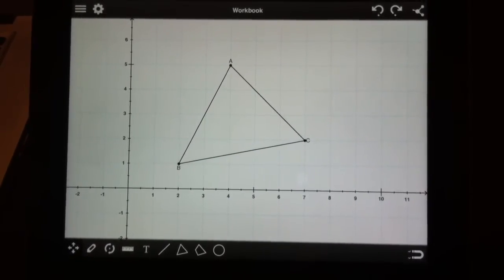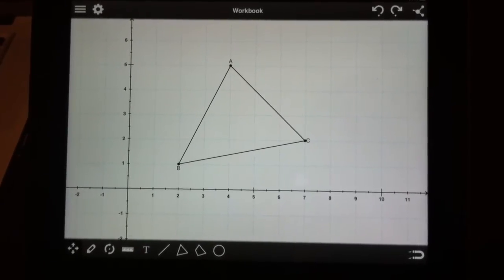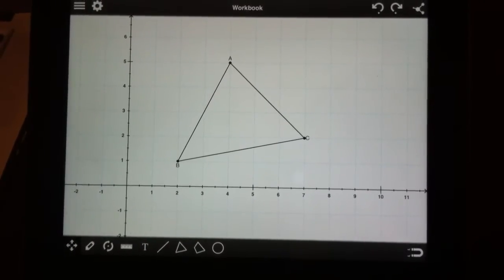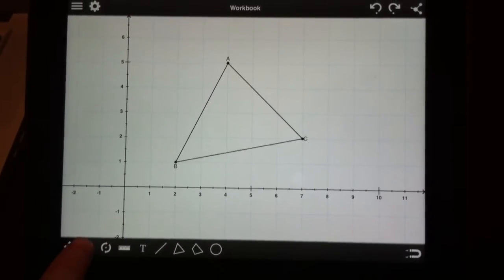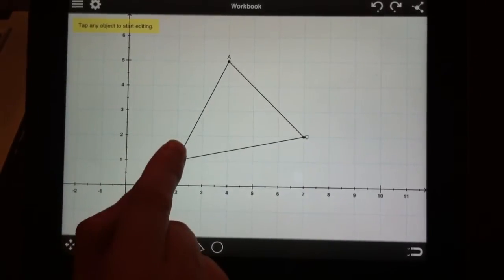So let's say we have a triangle ABC and I want to change the coordinates of one of its vertices B. First I activate the Edit tool right here, and next I tap point B.